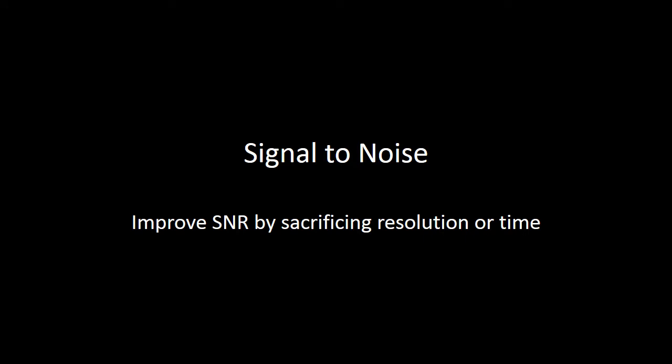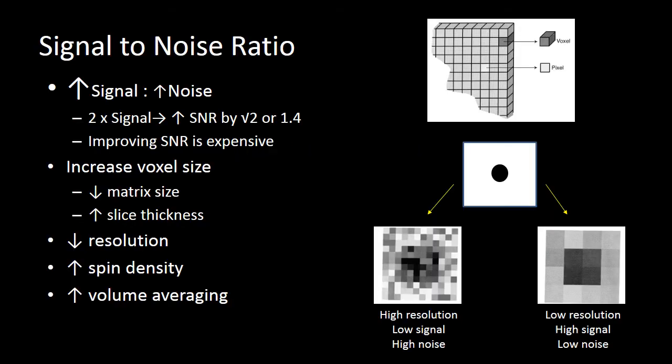Let's think about signal-to-noise. How do we improve signal-to-noise by sacrificing resolution or time? Increasing signal is going to increase noise. You have to double the signal to increase your signal-to-noise ratio by only 1.4. So your signal-to-noise ratio will only increase by the square root of how much additional signal you create. Improving signal-to-noise is therefore very expensive.